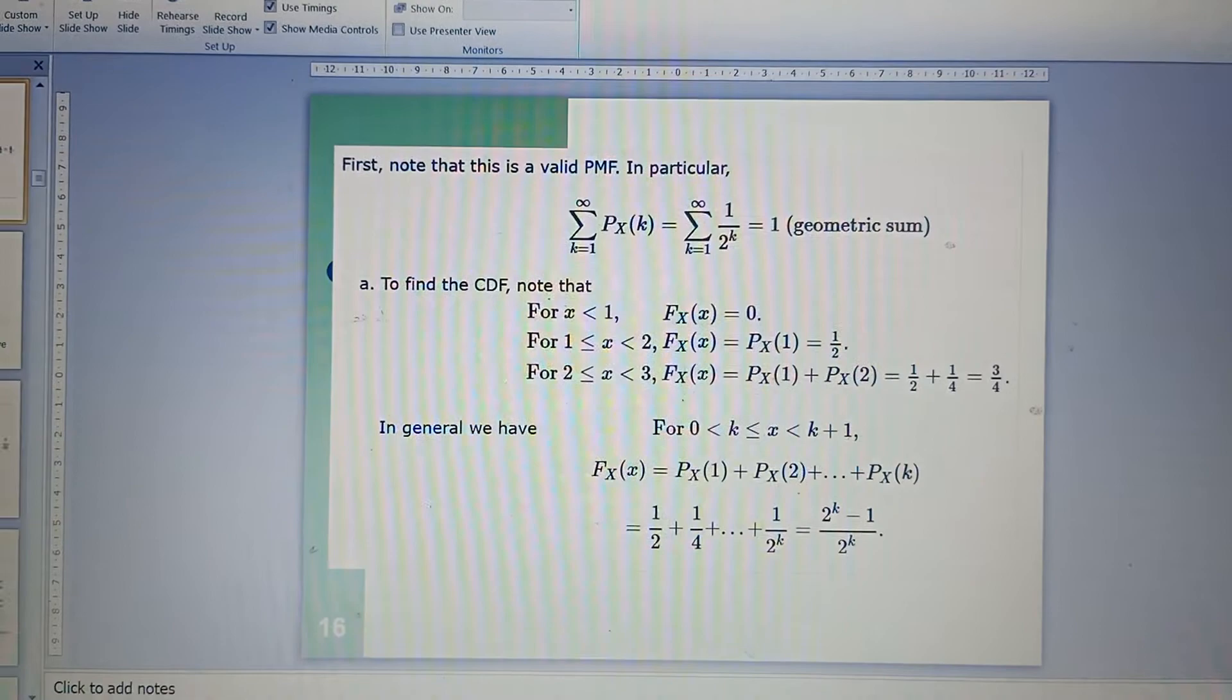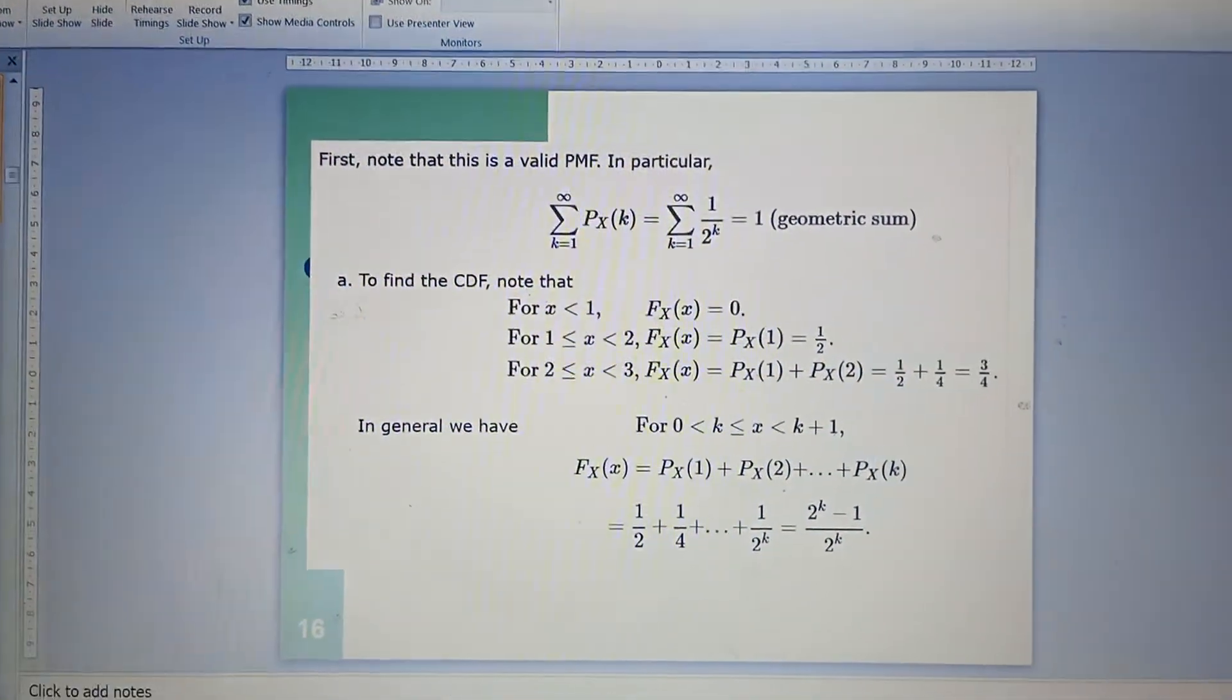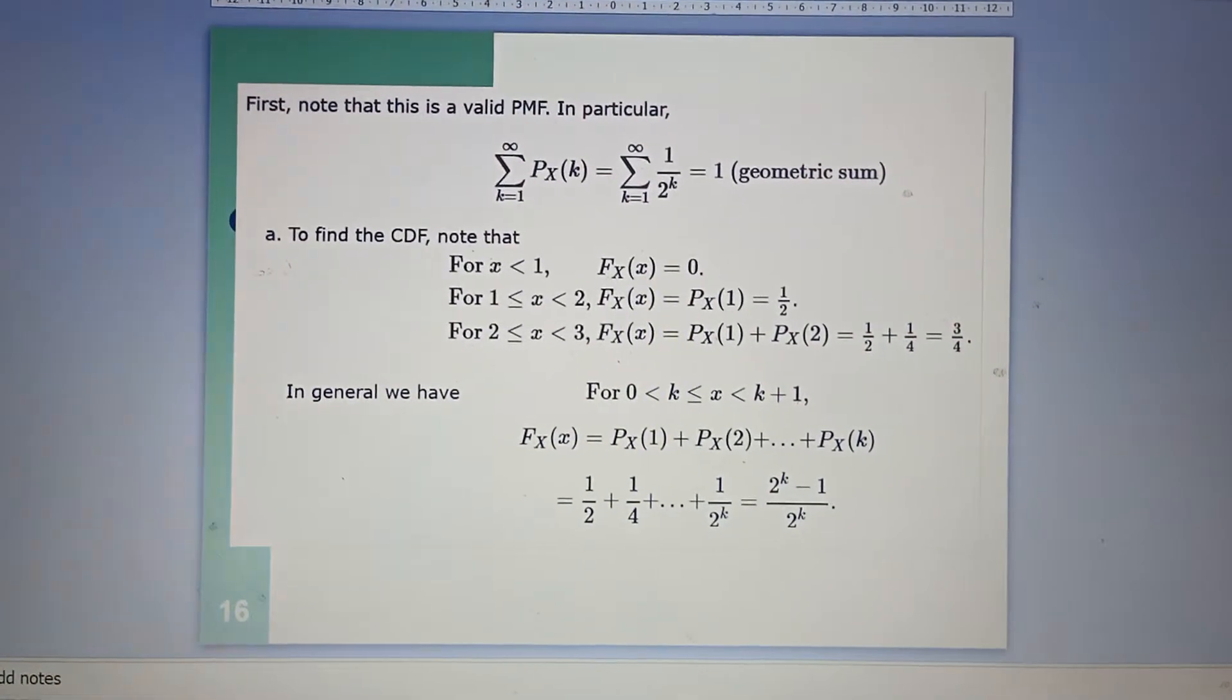Now, the probability mass function—I told you in my previous video that the summation of all values should be equal to 1. So that is what you can see here.